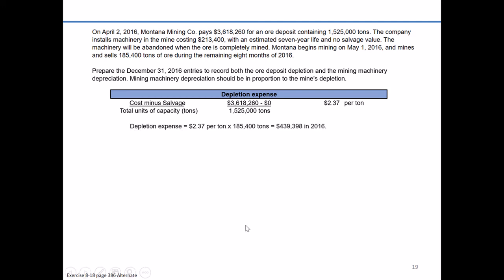To figure out depletion expense for the year, take the per-ton charge of $2.37 and multiply it by the total tons actually mined in the remaining months of 2016, which is 185,400 tons. So $2.37 per ton times 185,400 tons equals total depletion expense of $439,398 in 2016. They mined and sold all of those tons of ore in 2016.